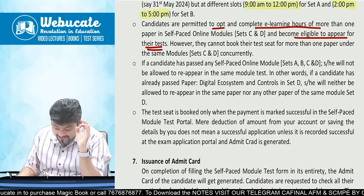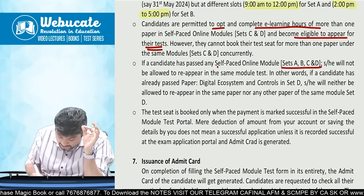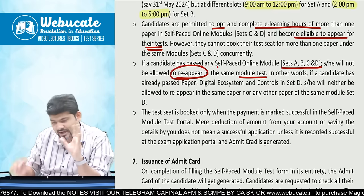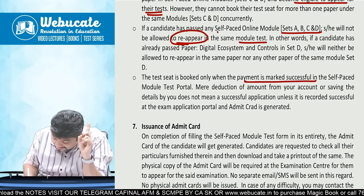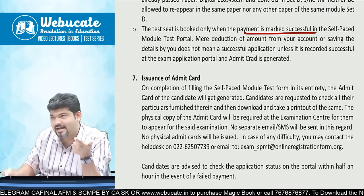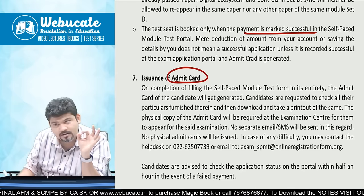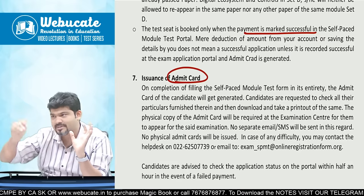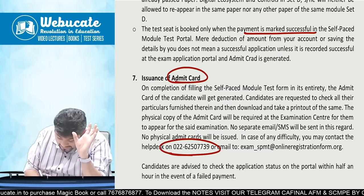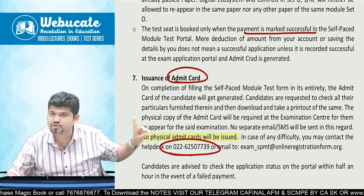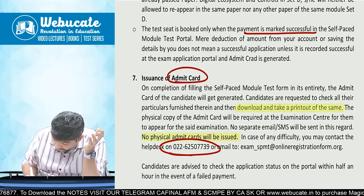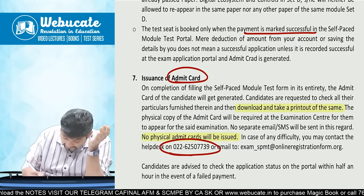If a candidate has passed any self-paced online module, they will not be allowed to reappear in the same module test. The seat is confirmed only when payment is marked successful — once payment is credited to ICAI's account, an admit card will be issued online. No physical admit cards will be issued; candidates will receive an online admit card showing their nearby center and zone, which they must print and carry.